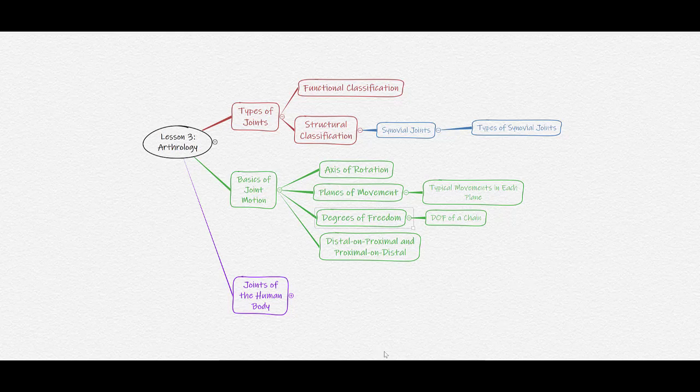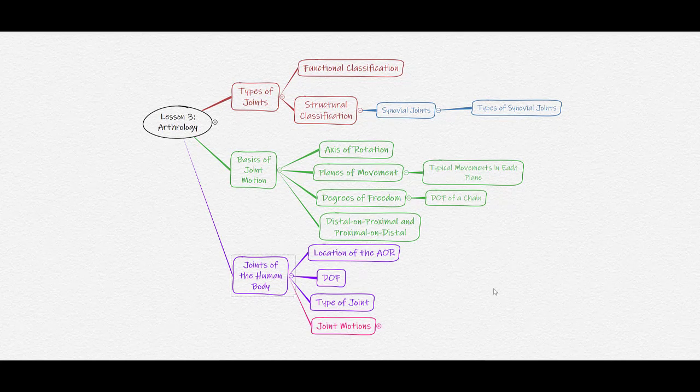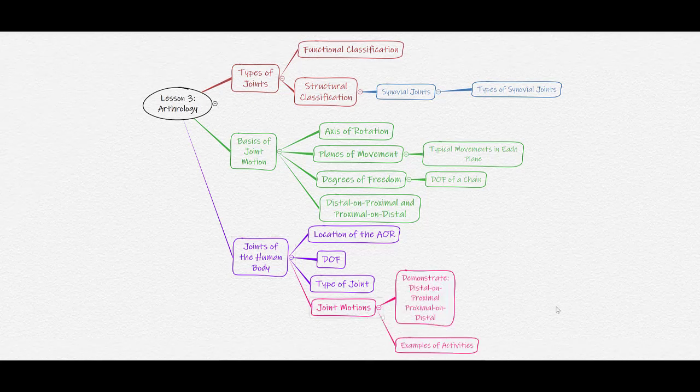Finally, we will examine the individual joints of the human body. For each joint, you will need to know the location of the axis of rotation, the degrees of freedom associated with that joint, the type of synovial joint, and the available joint motions. It's not enough to name the associated joint motions — you must also be able to demonstrate proximal on distal and distal on proximal movements, as well as give examples of each.